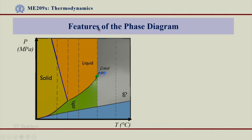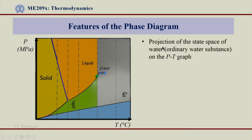Let us now see some features of this phase diagram. Features of the phase diagram, and what I am showing here is a pressure temperature diagram that we have just seen. We can see solid-liquid vapor region here and also gas in this region. So, projection of the state space of water on the PT graph that is what we are seeing here.